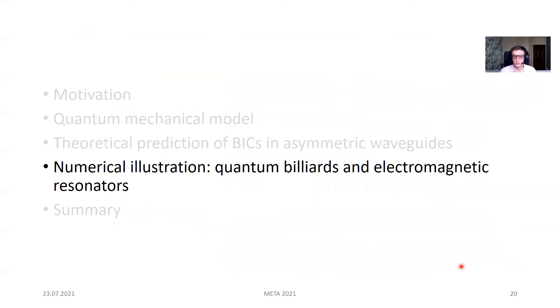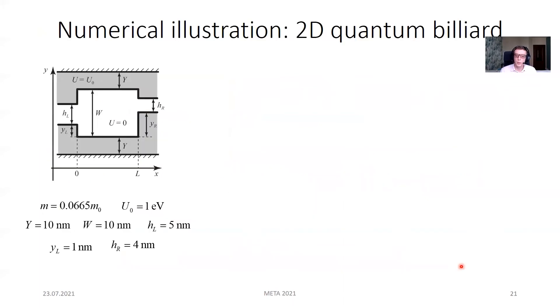As a first example, we take a two-dimensional quantum billiard with two waveguides of different widths. The scattering problem for this system is solved by the two-dimensional Schrödinger equation, using the eigenmode decomposition in the region of waveguides and resonator.